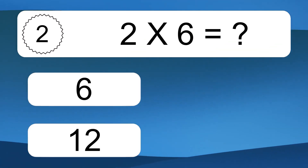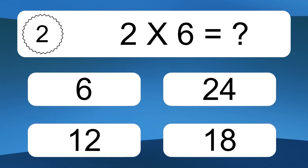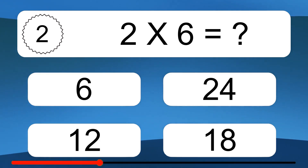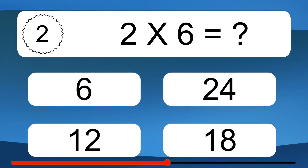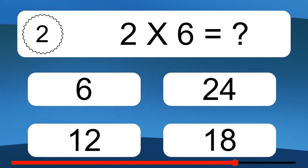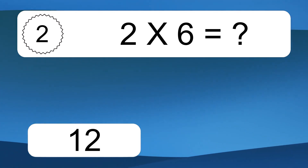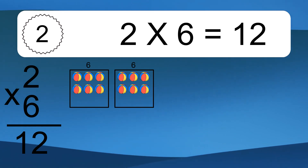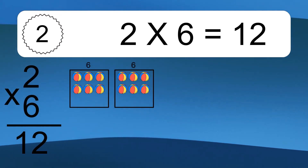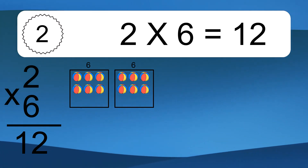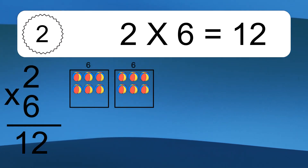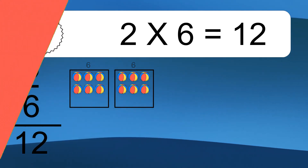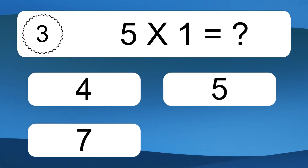Two times six equals what? Two times six equals 12. We have two boxes, and each box has six colorful balls inside. If you count all the balls in all the boxes together, you will have two times six balls. This equals 12 balls.